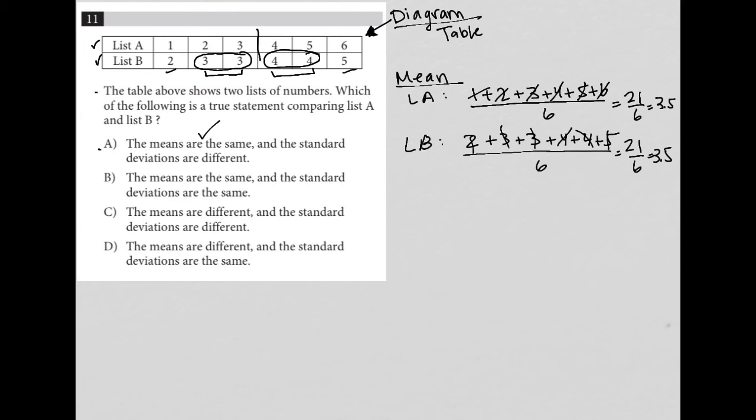Where if our mean is here, if this were 3.5, then we have a good proportion of our values from list B that are right next to it, only 0.5 units away.